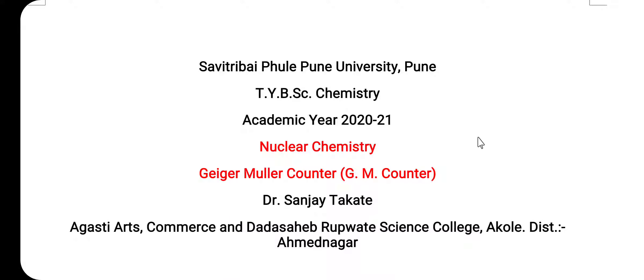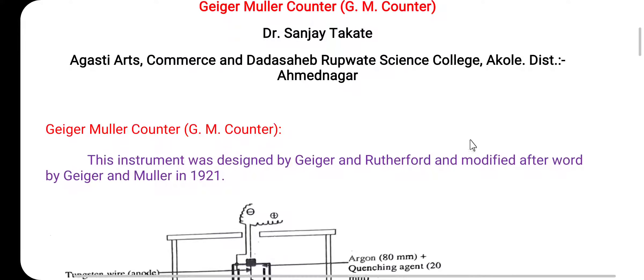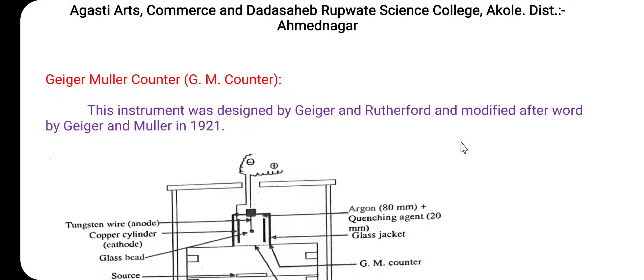In this lecture we are going to discuss the Geiger-Muller counter, that is the GM counter. In the last lecture we discussed the ionization chamber and the proportional counter. The GM counter was designed by Geiger and Rutherford, and then modified by Geiger and Muller in 1921, which is why it is called the GM counter or Geiger-Muller counter.